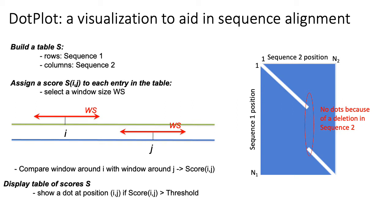You can infer the deletion by looking across the columns of this heat map. For every column, which corresponds to a position in sequence two, there's a white box — so every position in sequence two has some matching position in sequence one. But the reverse is not true: looking across the rows, in the gap area circled in red, there is a segment of sequence one for which there's no matching position in sequence two. That tells you there's either an insertion in sequence one or a deletion in sequence two.